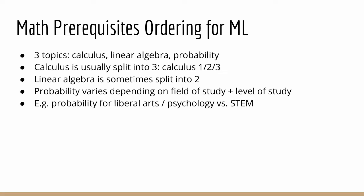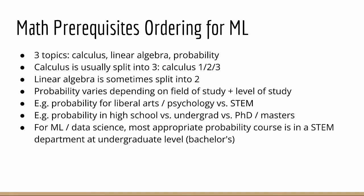This is very different from a probability course meant for science, engineering, and math majors. You can also learn a really advanced version of probability, which is usually meant for graduate students in statistics doing their PhD and master's degrees. For machine learning and data science, the most relevant form of probability is the one that science, engineering, and math majors are taught at the undergraduate level in a typical STEM bachelor's program.